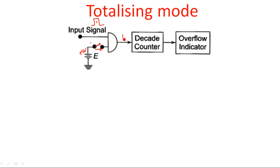When a pulse occurs, that means a logic high state, and the plus 5 volts continuously produces a logic one. One AND one becomes one, so when this one occurs the decade counter starts counting — plus one. For zero there is no count. Whenever the second pulse occurs, again one AND one becomes one, so the decade counter counts the next pulse — plus two. This continues from 0 to 9, that is, up to 10 pulses.